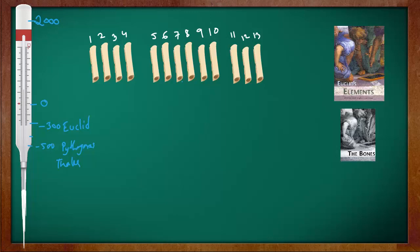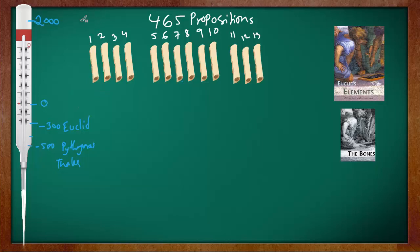The structure of the book: he wrote altogether 13 books or chapters, and there are 465 propositions — that means theorems and constructions. They are broken down into these chapters. The first four books are about shapes. Book 1 and Book 2 are about angles and triangles.